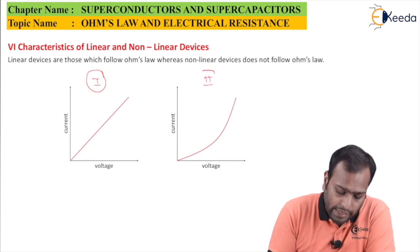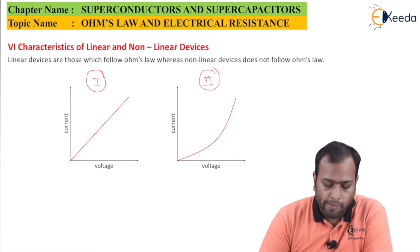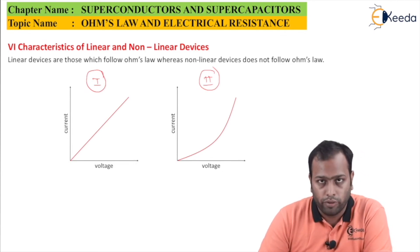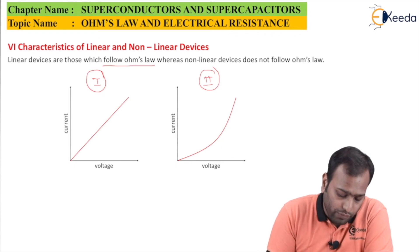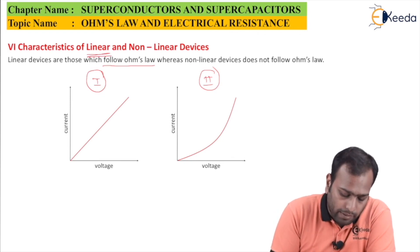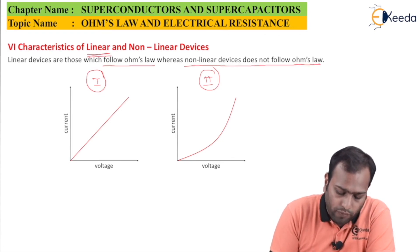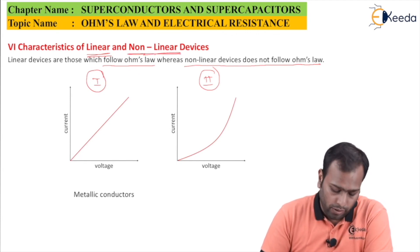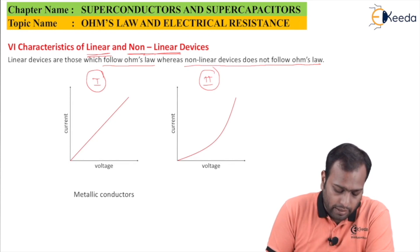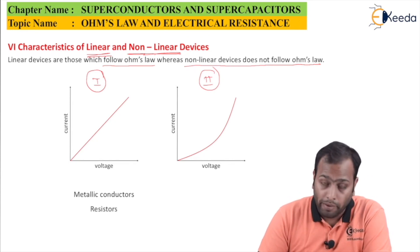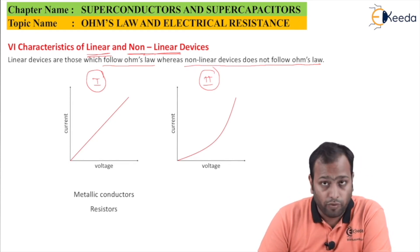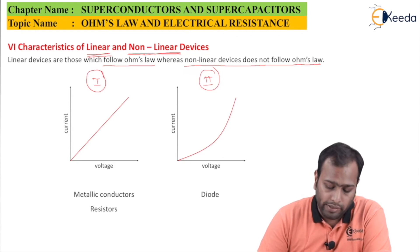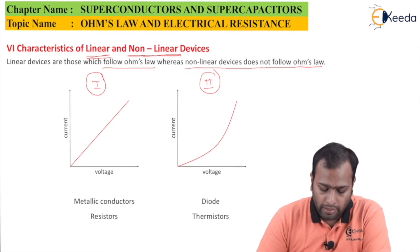For nonlinear devices, the graph is curved, meaning V directly proportional to I does not hold. Devices which follow Ohm's law are termed linear or Ohmic; those which do not are nonlinear. Examples of Ohmic devices include metallic conductors and resistors, while nonlinear devices include diodes and thermistors.